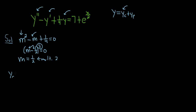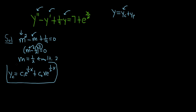So y sub c is going to equal c1 e to the ½x. But since it's repeated, you have to include an x, giving c2 x e to the ½x. So this is our complementary function, or associated homogeneous solution.